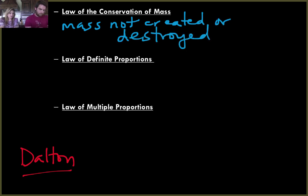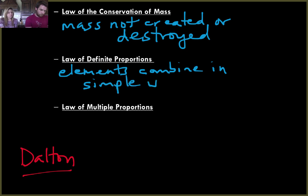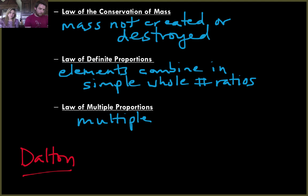We also have the law of definite proportions and multiple proportions, and these relate to postulates four and five. Definite proportion means that elements combine in one simple whole number ratio. Multiple proportions means we have multiple combinations. Just like the water and hydrogen peroxide - water would be definite proportions. Multiple proportions would be water and the hydrogen peroxide. Same elements, different combination.